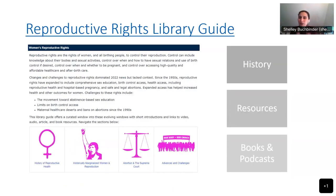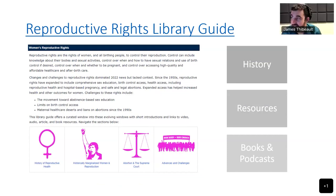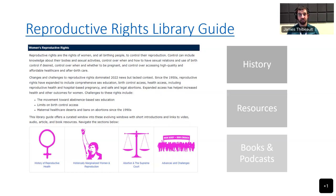I'm going to turn things over to James, who will talk about the Reproductive Rights Library Guide. We tried to condense a very long lib guide that took months to create into barely an hour presentation. The guide is broken into four categories: the history of reproductive health, historically marginalized women in reproduction, abortion in the Supreme Court, and advances and challenges. We tried to be as educational as possible, backing up as many sources as we can. If you're interested in any one of these categories, I highly recommend checking out the lib guide.